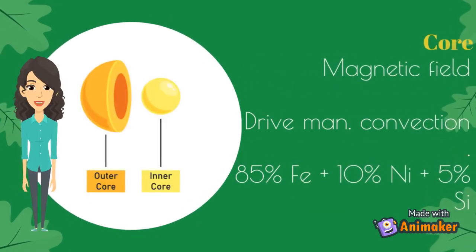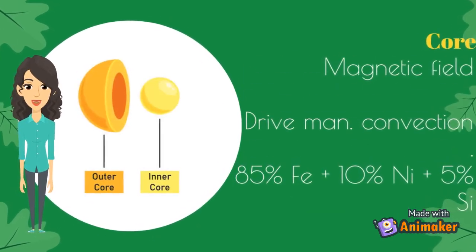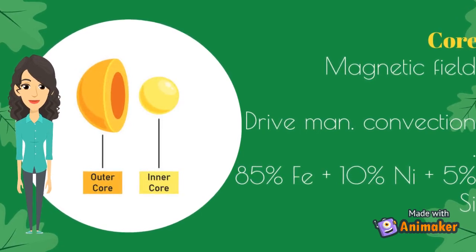Let's talk about the importance of the core. As mentioned, the outer core is liquid, meaning convection can occur. From that, the outer core generates the Earth's magnetic field.